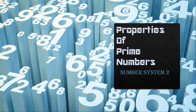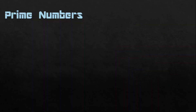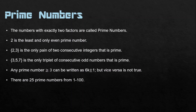Hello and welcome to Percent Errors. This is the second video on the nervous system, and in this we will be discussing the various properties of prime numbers. Prime numbers are numbers that have exactly two factors — not less than two, not more than two, exactly two factors. This is the definition.